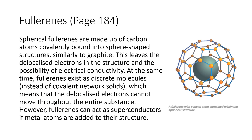Spherical fullerenes are made of carbon atoms covalently bonded in a sphere shape, similar to graphite. This leaves delocalized electrons in the structure and the possibility of electrical conductivity. At the same time, fullerene exists as discrete molecules instead of covalent network solids. In fullerene, one carbon is covalently bonded to three other carbons, similar to graphite.